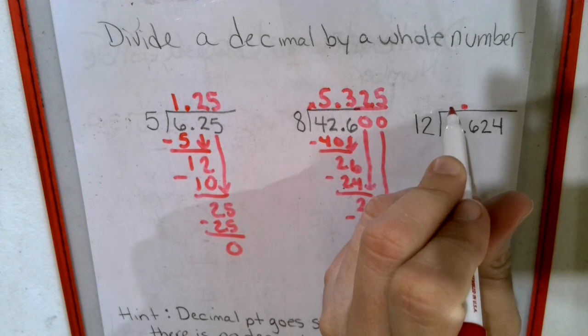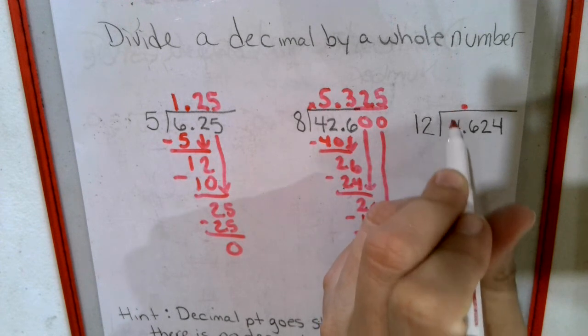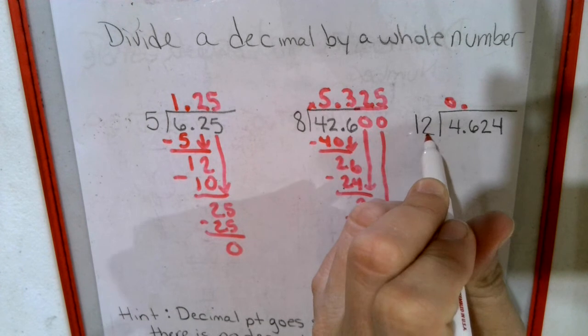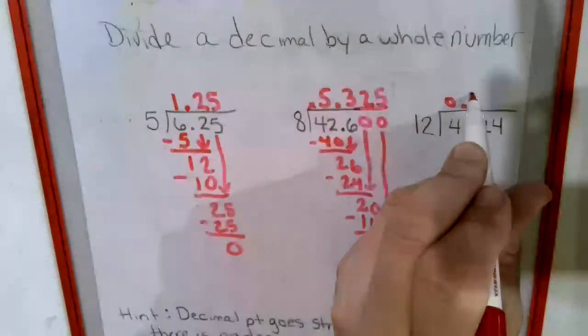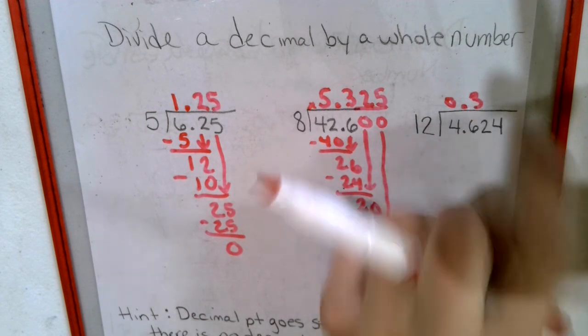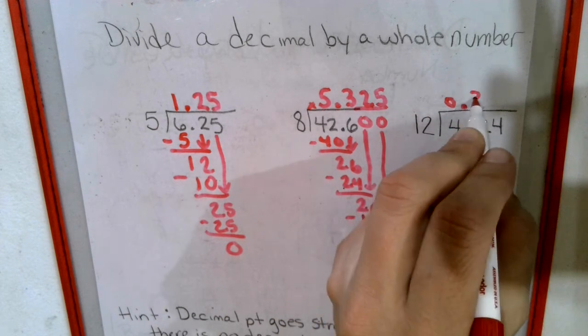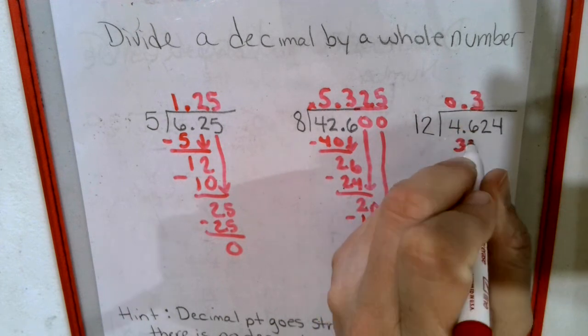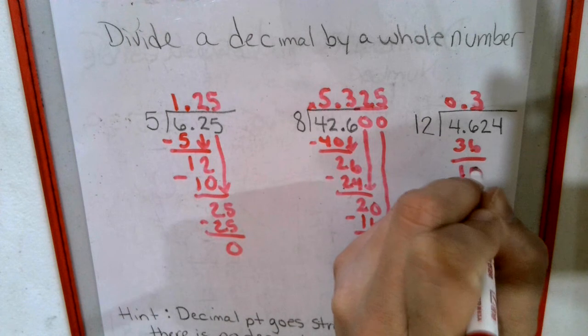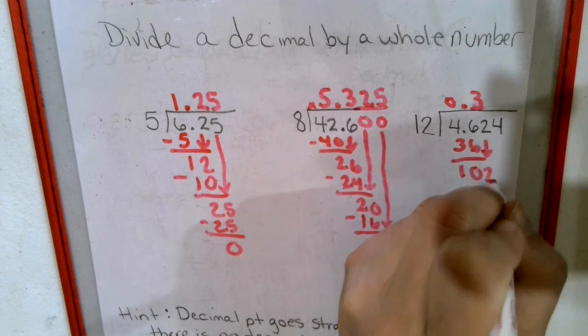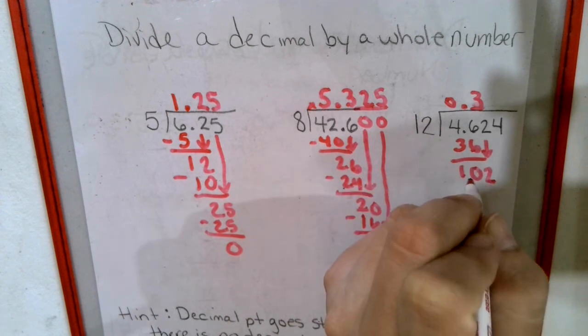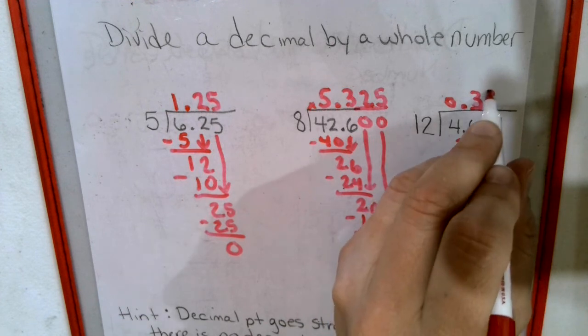12 can't go into 4. You can put a 0 there if you want. 12 goes into 46 three times. That's a bad looking 3. Make 36, 10 left over. Bring down the 2. 12 goes into this 8 times.